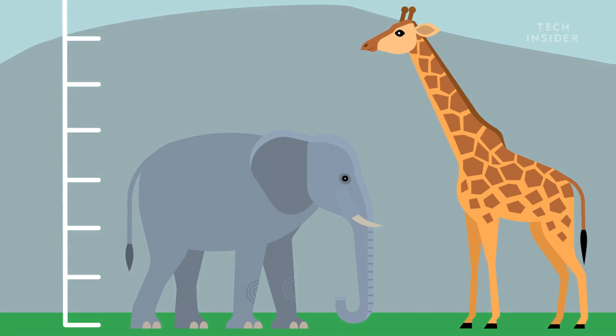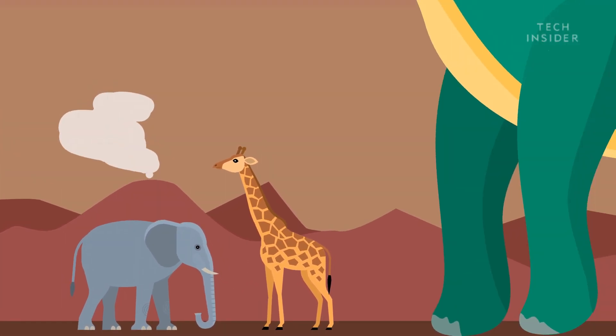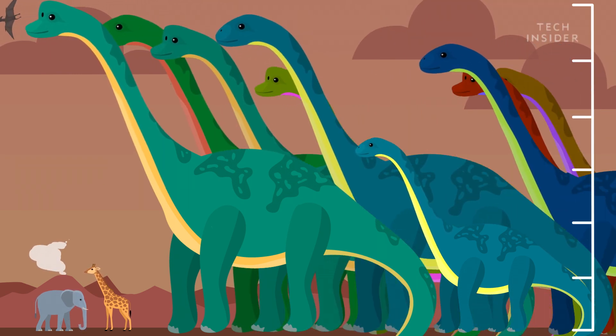And if we look at animals throughout Earth's history, dinosaurs eclipse them all. These towering sauropods were the biggest of the bunch. In fact, the top ten list of tallest animals in history? All dinosaurs.